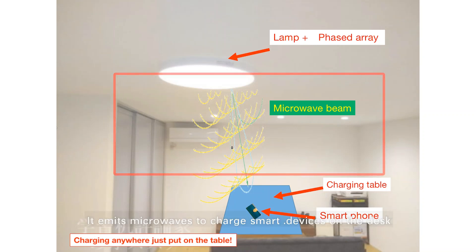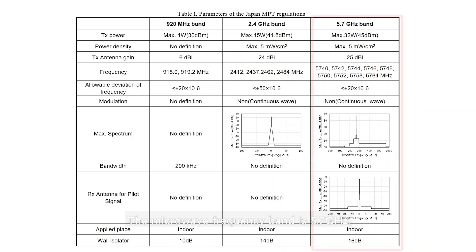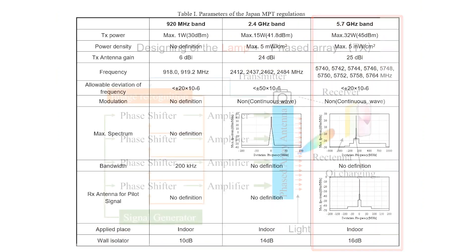It emits microwaves to charge smart devices on the desk. The microwave frequency band is 5.7 GHz.